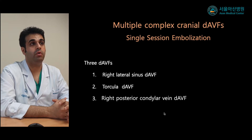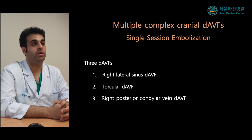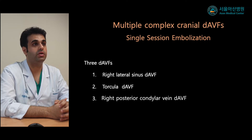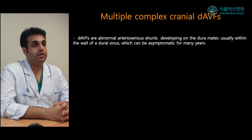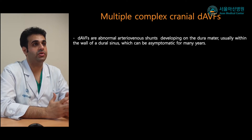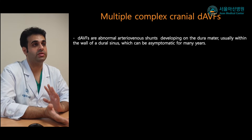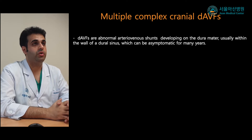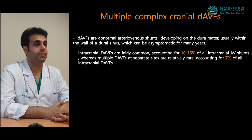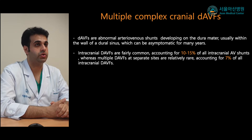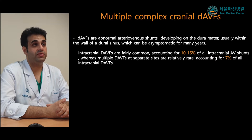In summary, there are three locations of the dural AV fistula in this case. Dural AV fistula is an abnormal connection between an artery and a vein — an abnormal arteriovenous shunt that develops from the dura mater, usually at the wall of a dural sinus, and can be asymptomatic for many years. Intradural cranial AV fistula is relatively common, accounting for up to 15% of all intracranial AV shunts. However, multiple dural AV fistulas at separate sites, as in our case, are relatively rare, accounting for up to 7%.